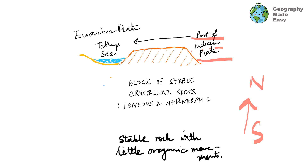Where the Himalayas stand today, there was a shallow sea called the Tethys. As the Indian plate kept thrusting towards the north towards the Eurasian plate, there was a depression — the Tethys — which later became the Himalayas. In the south, the Indian plate comes through, and this stable block of stable crystalline rock forms a higher, rigid and inflexible area, forming what we know as the plateau.